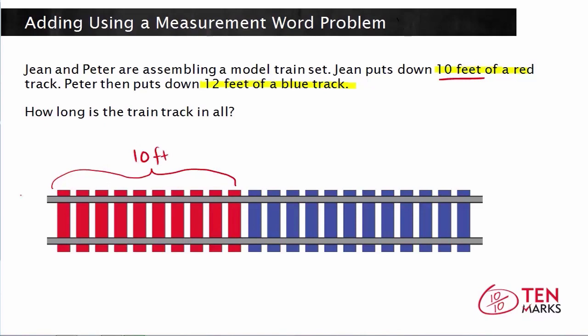Then Peter comes in and he adds more to the train track, and he adds 12 feet. This blue section corresponds to what Peter did, and this is 12 feet. You can abbreviate the word feet with FT, just like shown here.